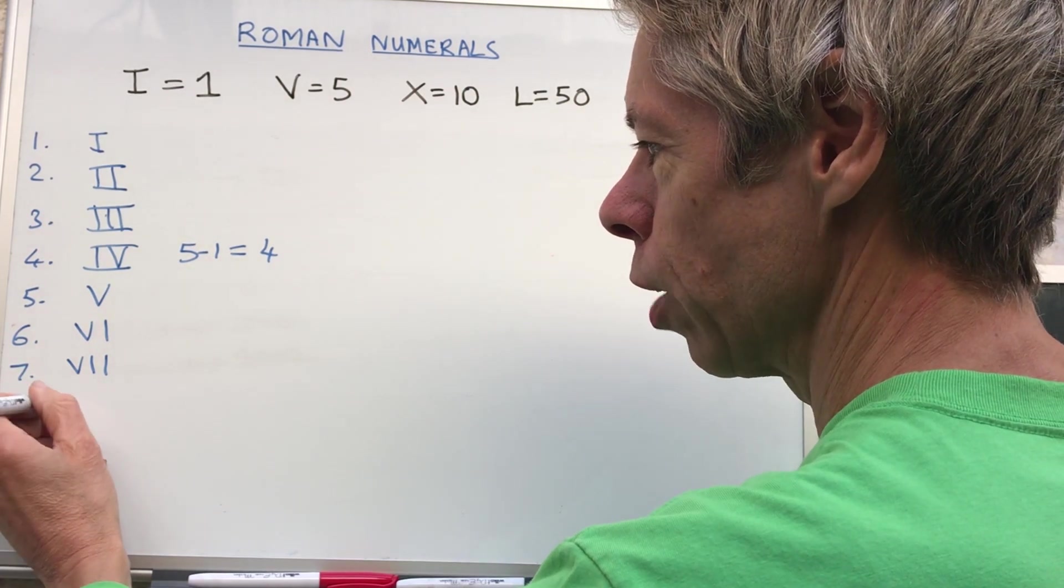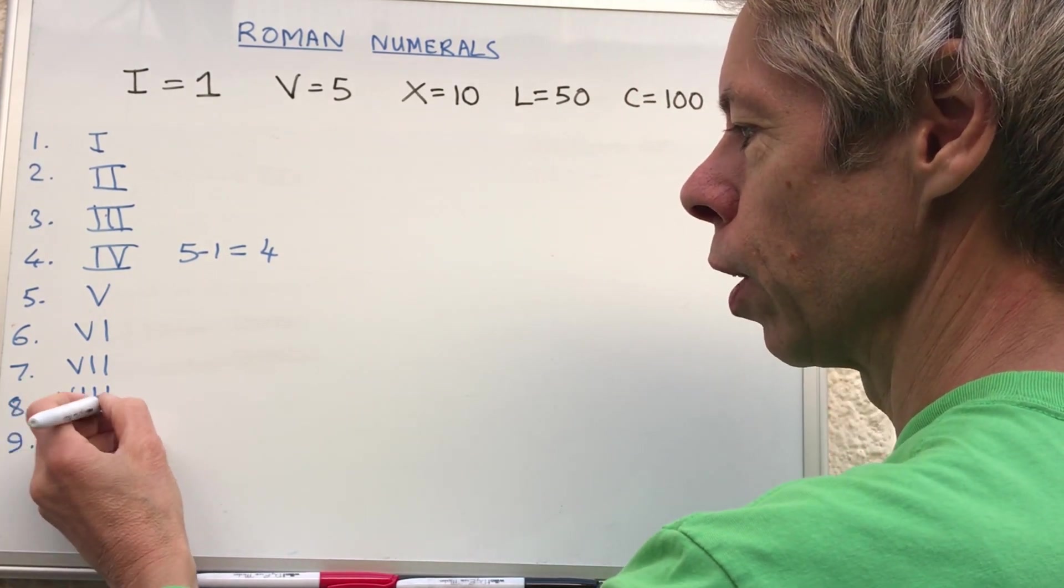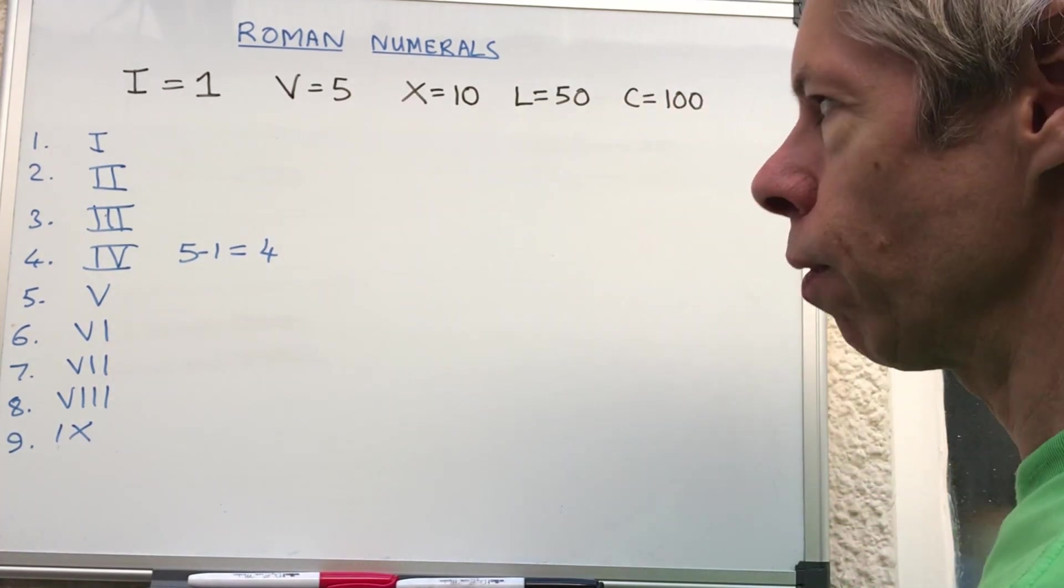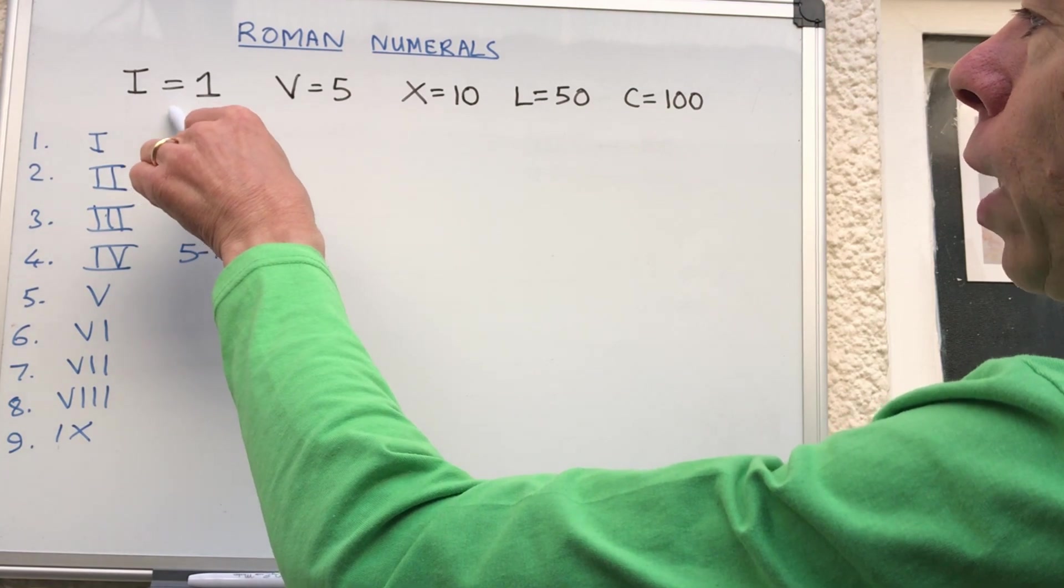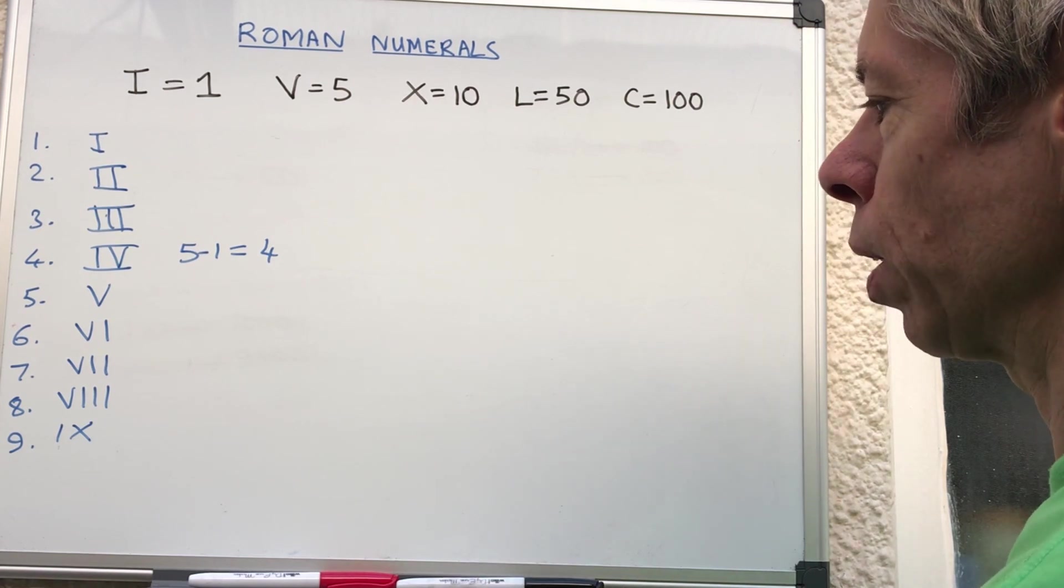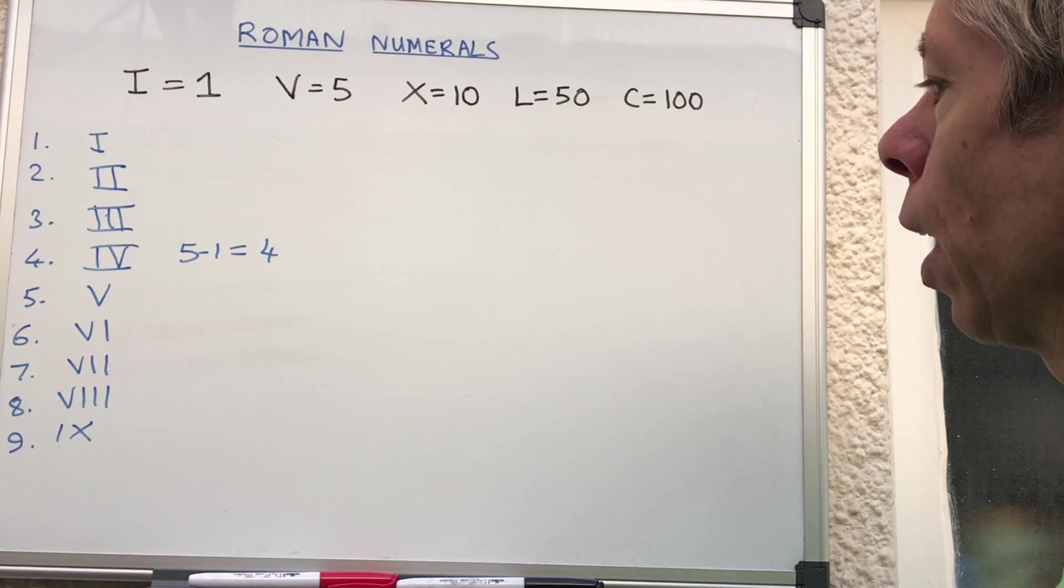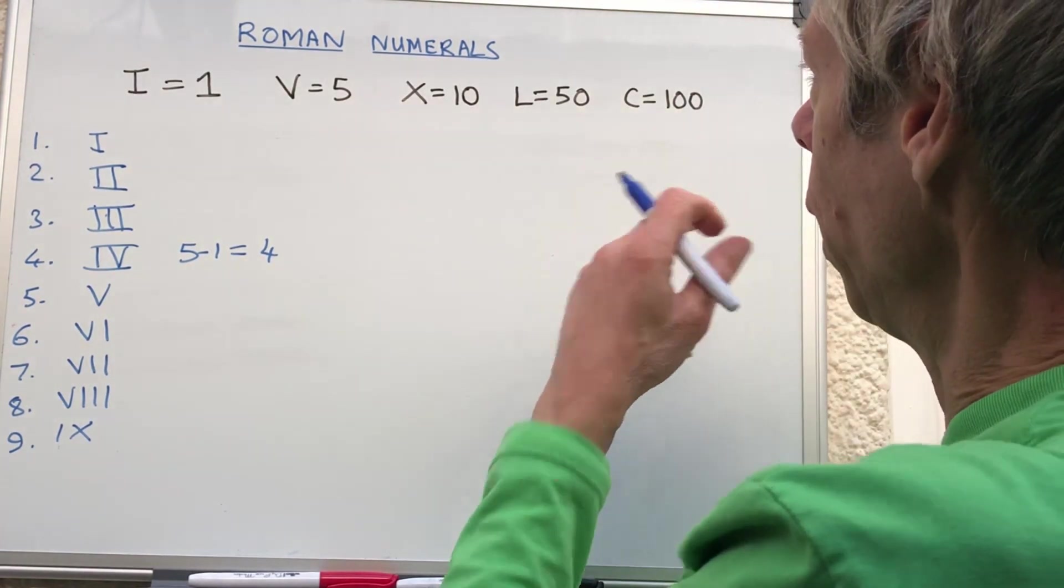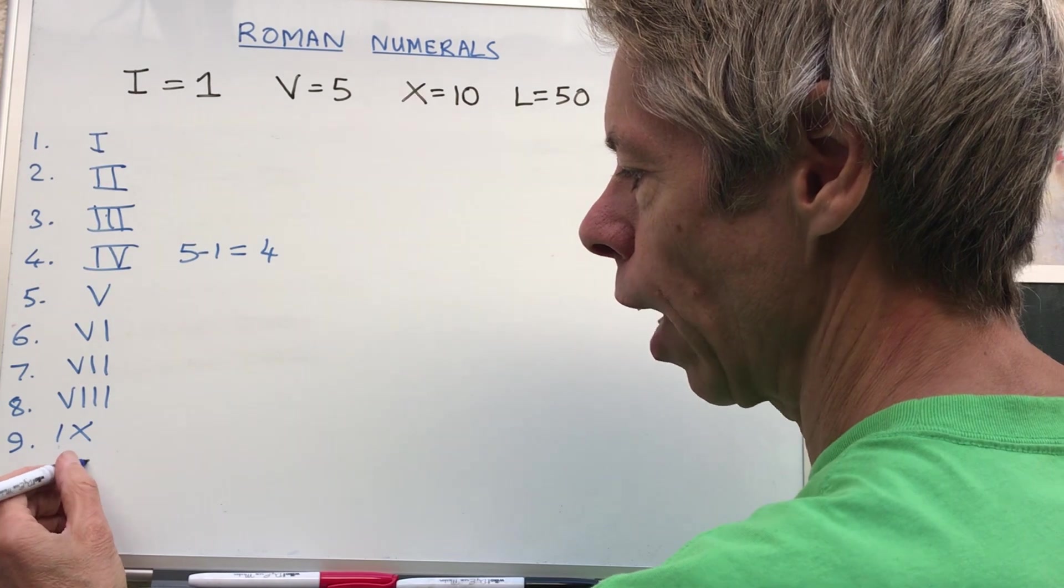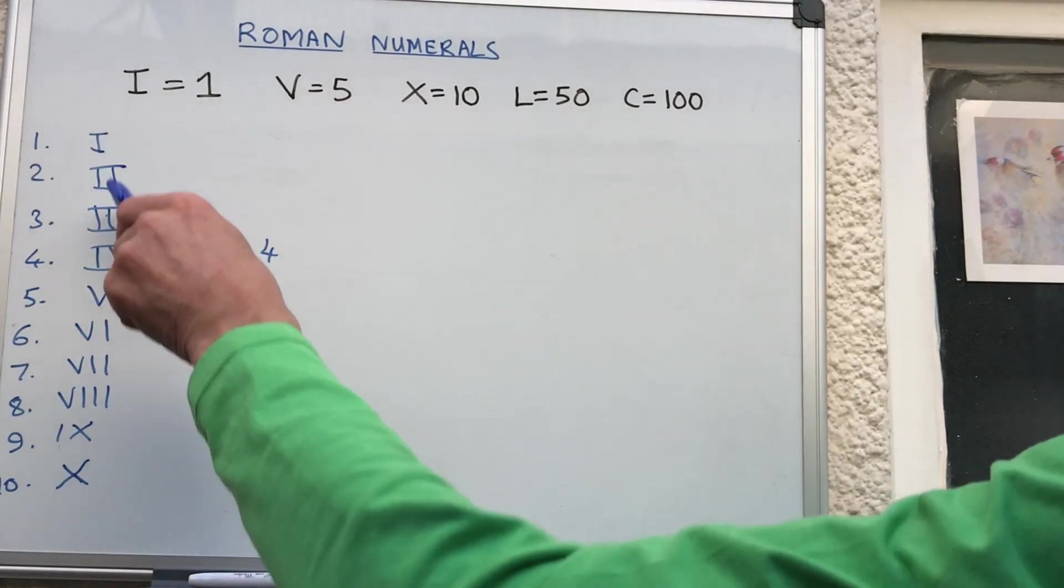By eight we go five, six, seven, eight. Nine - we're not allowed to put on another one there, so we've got to do ten take away one - IX. These are actually quite clever because using these symbols we can display all the numbers up to about three hundred ninety-nine, and then ten is X.